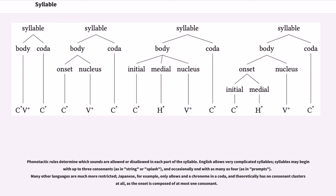Phonotactic rules determine which sounds are allowed or disallowed in each part of the syllable. English allows very complicated syllables; syllables may begin with up to three consonants, and occasionally end with as many as four. Many other languages are much more restricted. Japanese, for example, only allows a nasal in the coda, and theoretically has no consonant clusters at all, as the onset is composed of at most one consonant.